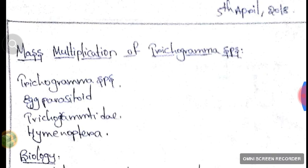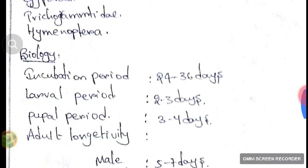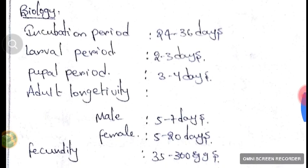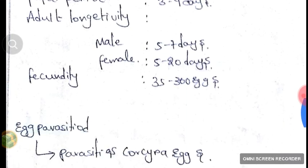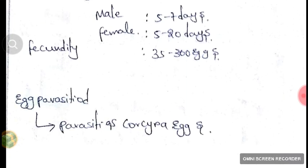In Green Coach classes today, we learned the mass multiplication of Trichogramma species. Trichogramma species is an egg parasitoid belonging to the family Trichogrammatidae and order Hymenoptera. Its incubation period is 24 to 36 days, larval period 2 to 3 days, pupal period 3 to 4 days, male longevity 5 to 7 days, female longevity 5 to 20 days, and fecundity 35 to 300 eggs. It parasitizes on Corcyra eggs.